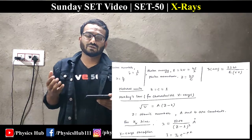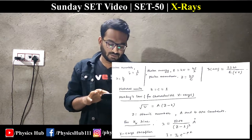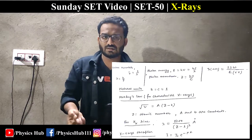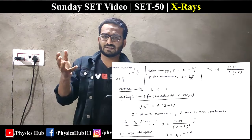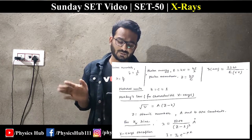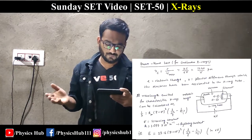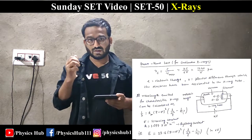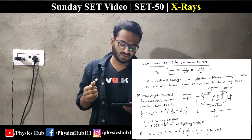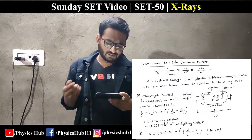These formulas are very important for this set and for other examinations. For X-ray absorption: I equals I₀ e^(−μx). There are two types of X-rays: continuous X-rays and characteristic X-rays. For continuous X-rays, the cutoff wavelength arises from the accelerating potential difference.